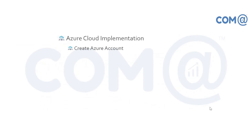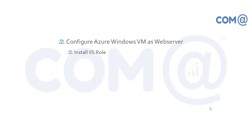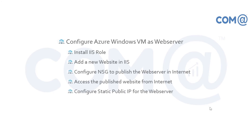In the practical section, we'll create an Azure account, then create an Azure virtual network, network security groups, and an Azure storage account. We'll also create Azure virtual machines and see how to connect to them using RDP. We'll configure a Windows virtual machine as a web server — installing the IIS role, adding a new website in IIS, configuring a network security group to publish the web server to the public internet, accessing the public website, and configuring a static IP for the web server.